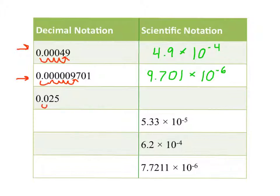My next number just needs 2 hops. In scientific notation, I'll write 2.5 times 10 to the negative 2. Again, all of these exponents are negative because my numbers are less than 1.